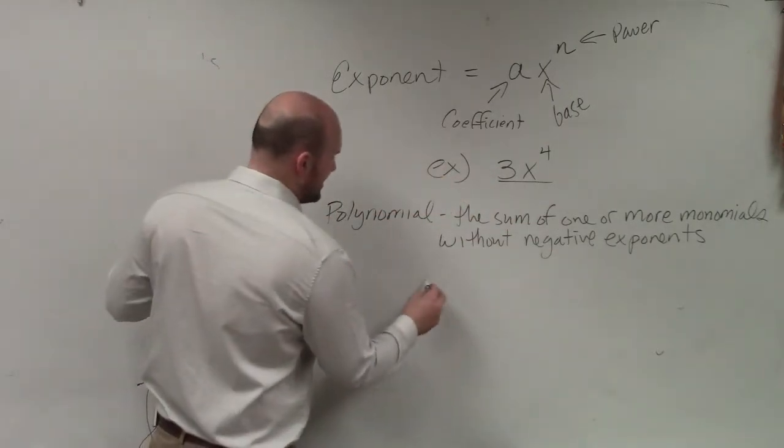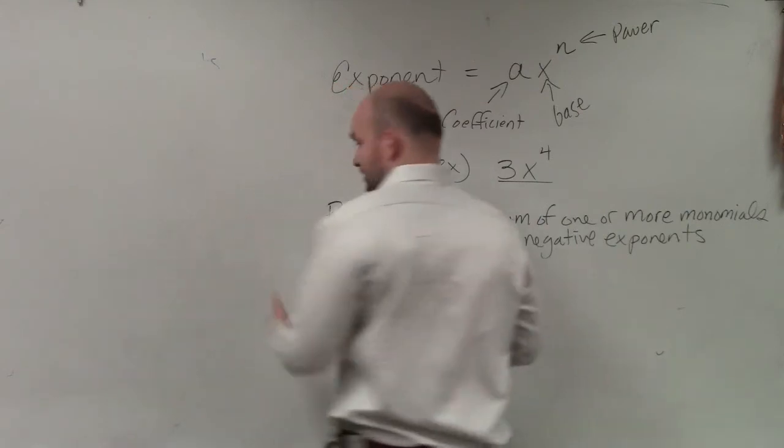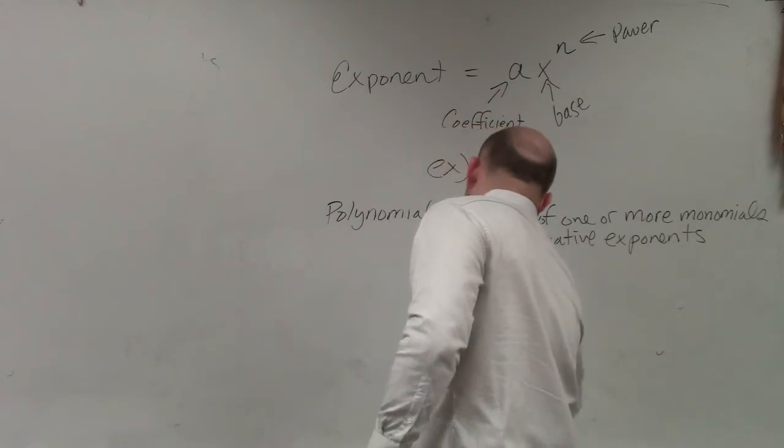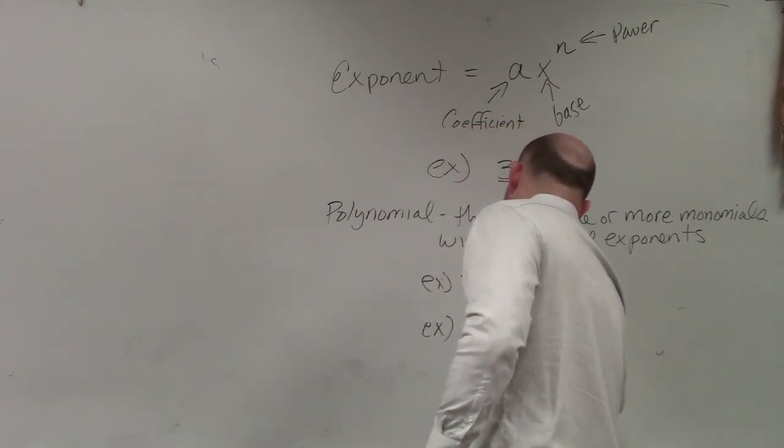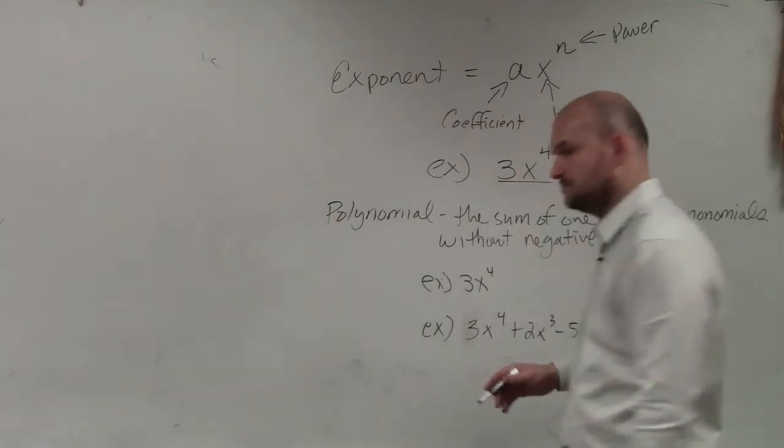Some examples of polynomials would be like 3x to the fourth, the one like I just did. Another example you could do would be 3x to the fourth plus 2x cubed minus 5.